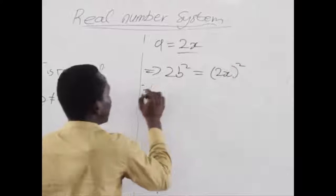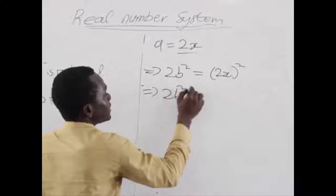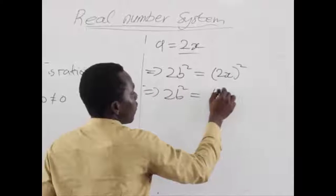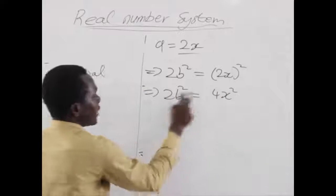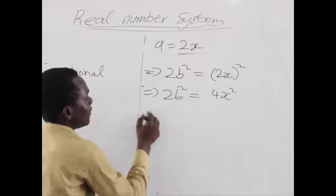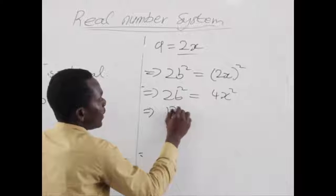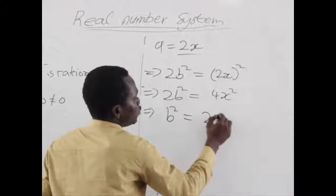Which expanding gives us 2b squared equals 4x squared. We try to simplify the coefficients, and we get b squared equals 2x squared.